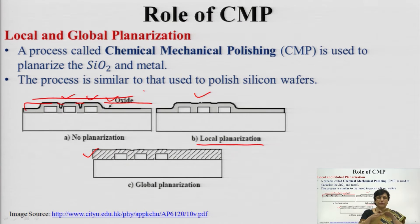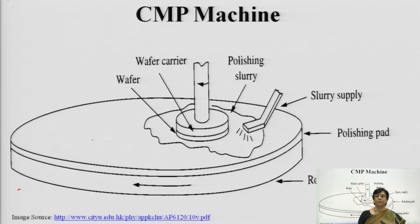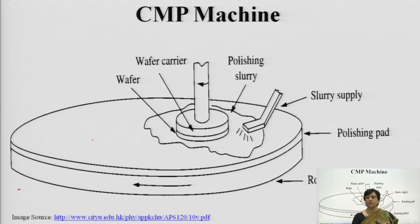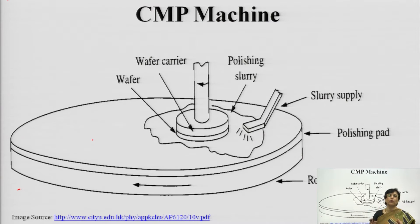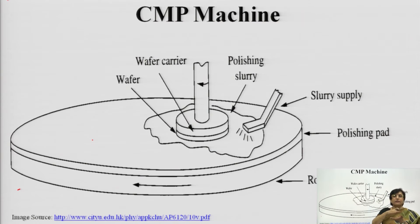Global planarization takes the overall wafer surface flatness into account. To achieve global planarization, we go for chemical mechanical polishing (CMP). This is the same machine used in wafer polishing. You have a rotating chuck — a lot of theory has gone into the rotational speed, the pressure — and there is a slurry which creates proper friction to eliminate a very fine layer, making the surface smooth.